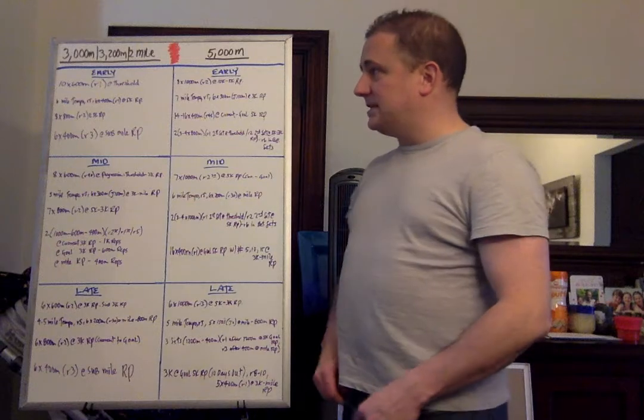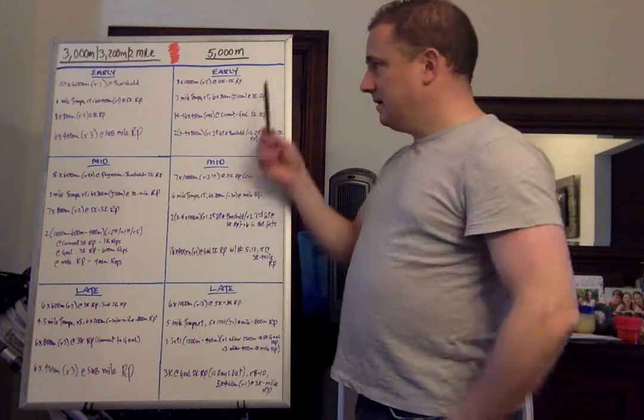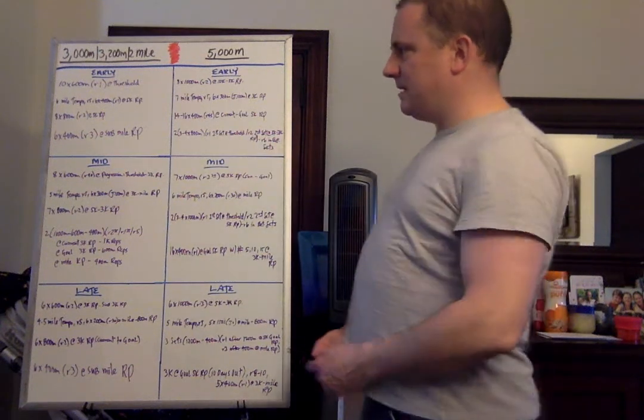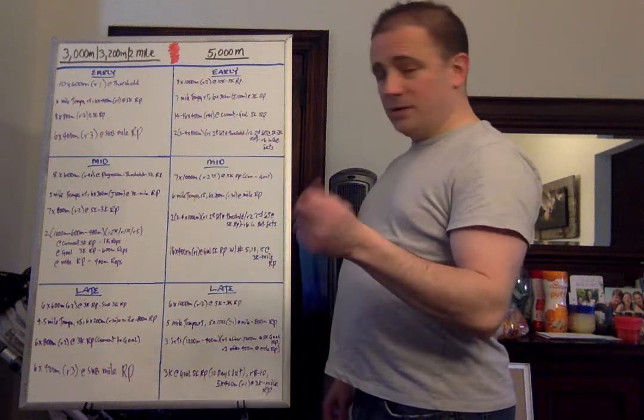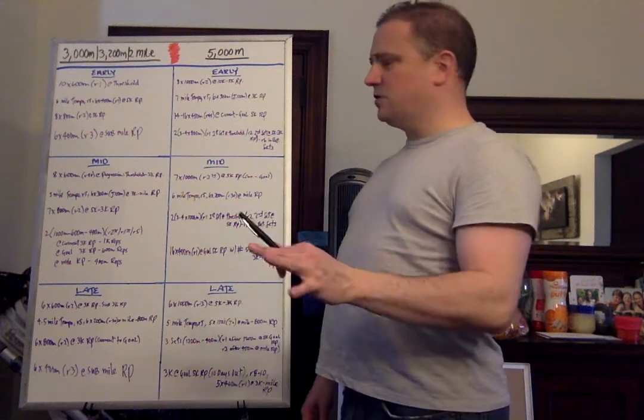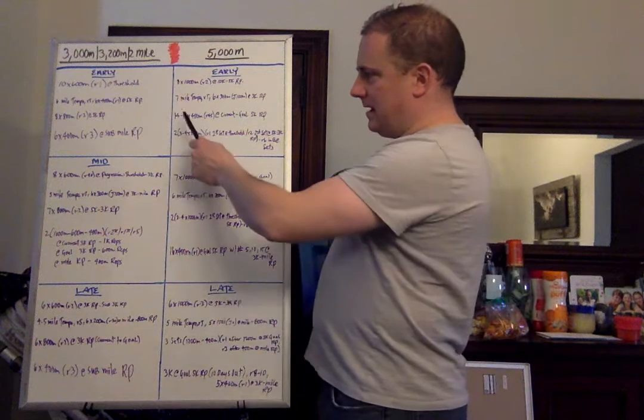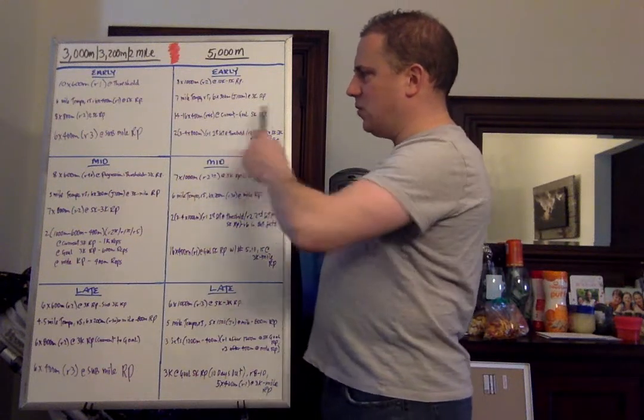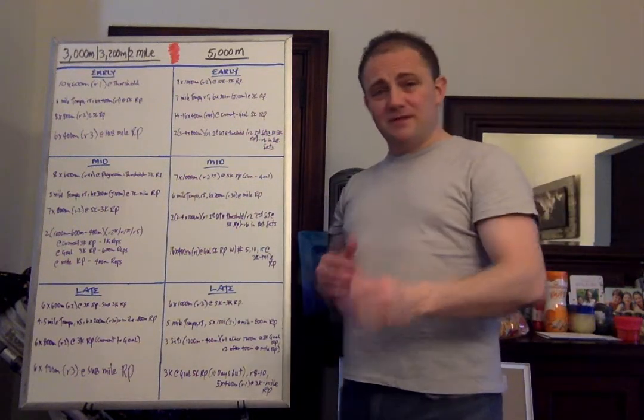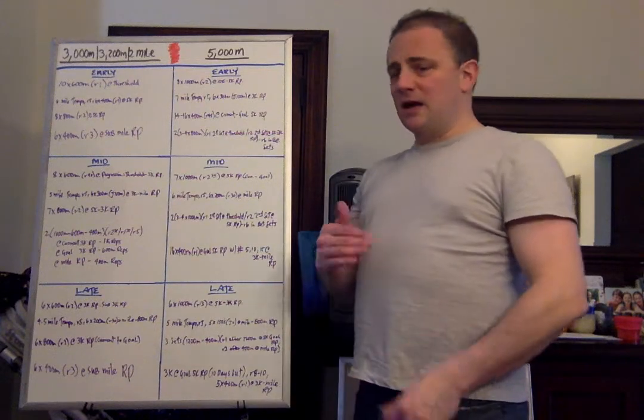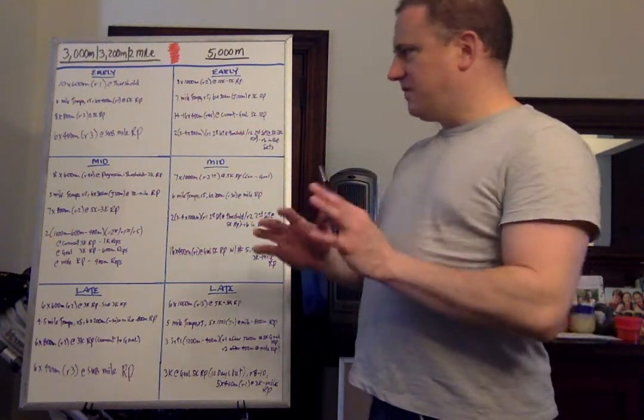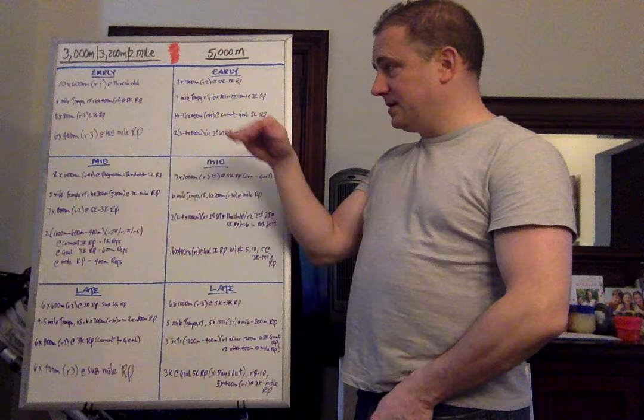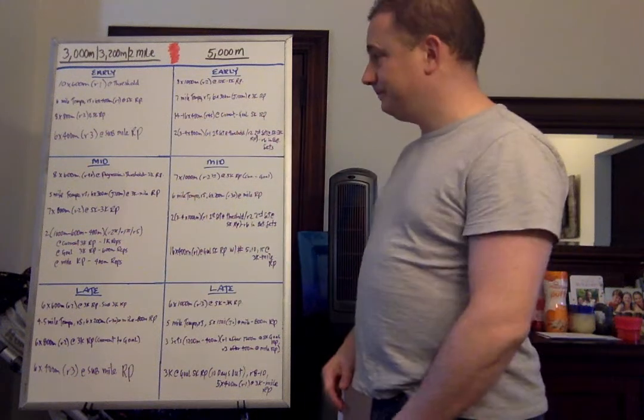Now, let's get over to the 5,000. Early season: eight by 1,000 with a two-minute recovery, progressing from 10K pace to 5K pace current. Next one: seven-mile tempo, five-minute active recovery, and then six by 300-meter efforts with a 100-meter jog at 3K race pace. And the next one is 14 to 16 by 400-meter efforts with 45 seconds recovery at current to goal 5K race pace. If your athletes are super fit, there's a chance you might be able to do that with 30 seconds, but I would only do that when your athletes are at the fittest. 45 seconds is sufficient. If you're running these at 75, you're basically going off every two minutes. So it's quick.